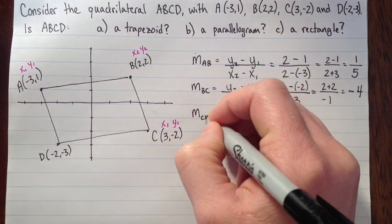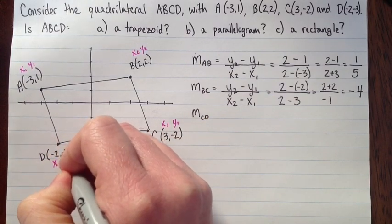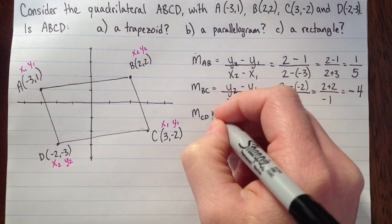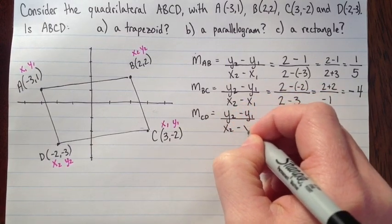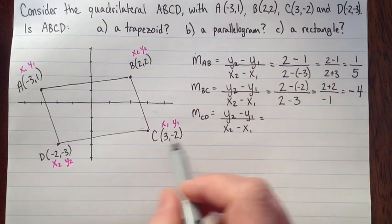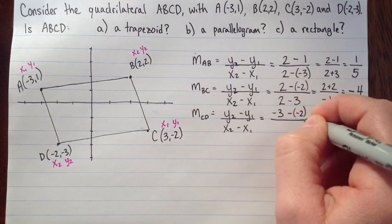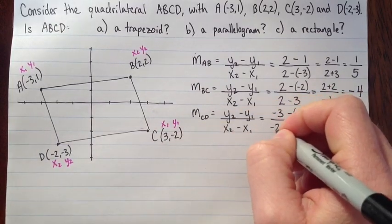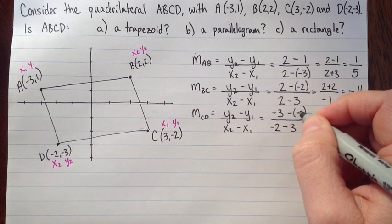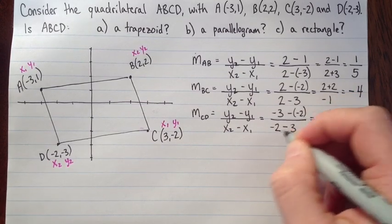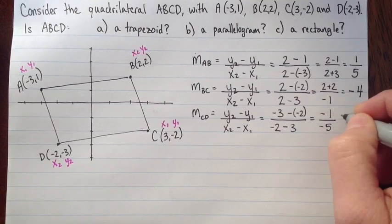Next is the slope of CD. Our slope formula: y2 minus y1 over x2 minus x1. I strongly suggest you write it down every time, as that's the best way to memorize the formula. So y2 is negative 3 minus negative 2 over negative 2 minus 3. That's negative 3 plus 2 is negative 1, and negative 2 subtract 3 is negative 5. Negative divided by negative is positive, so it's 1/5.